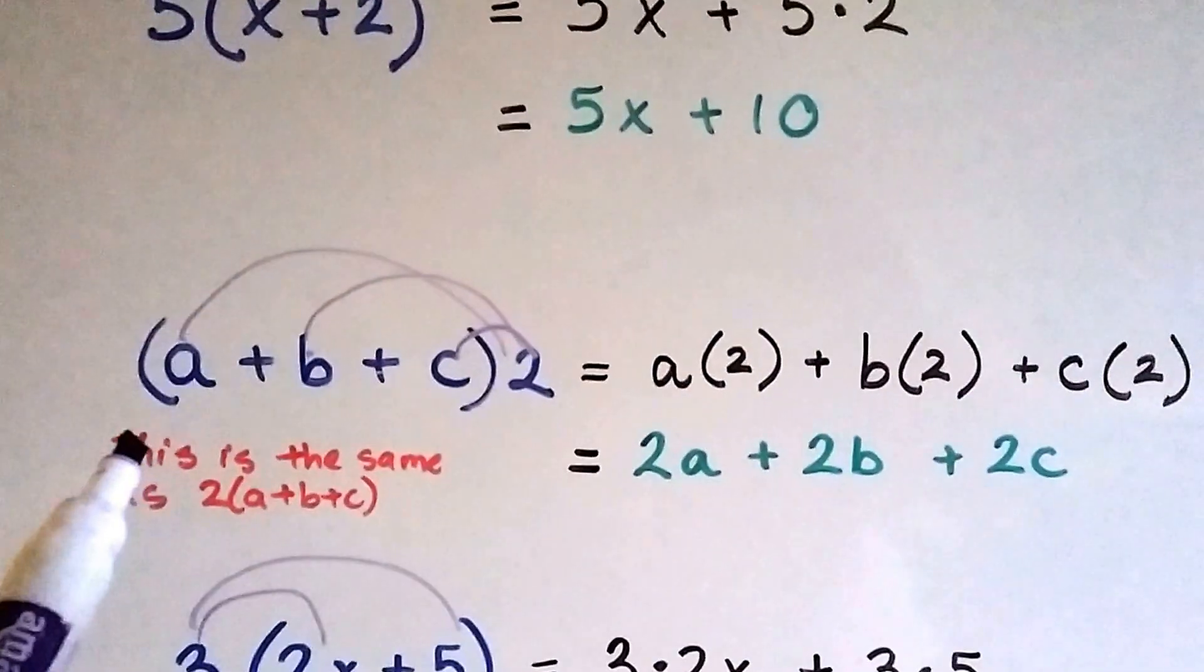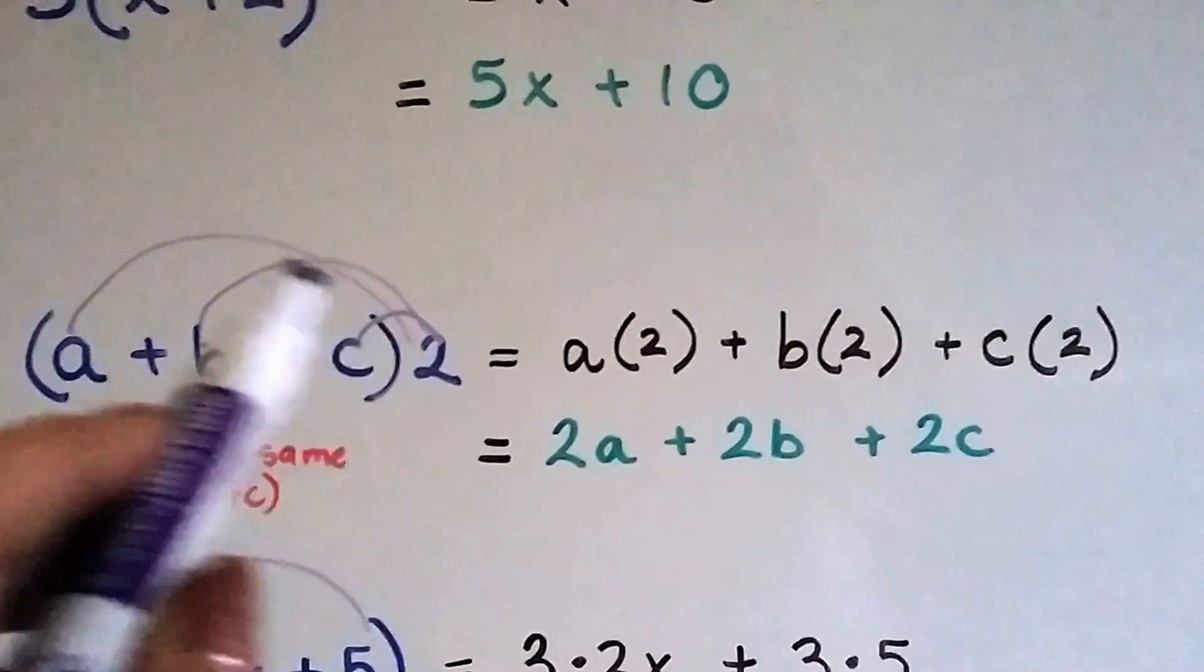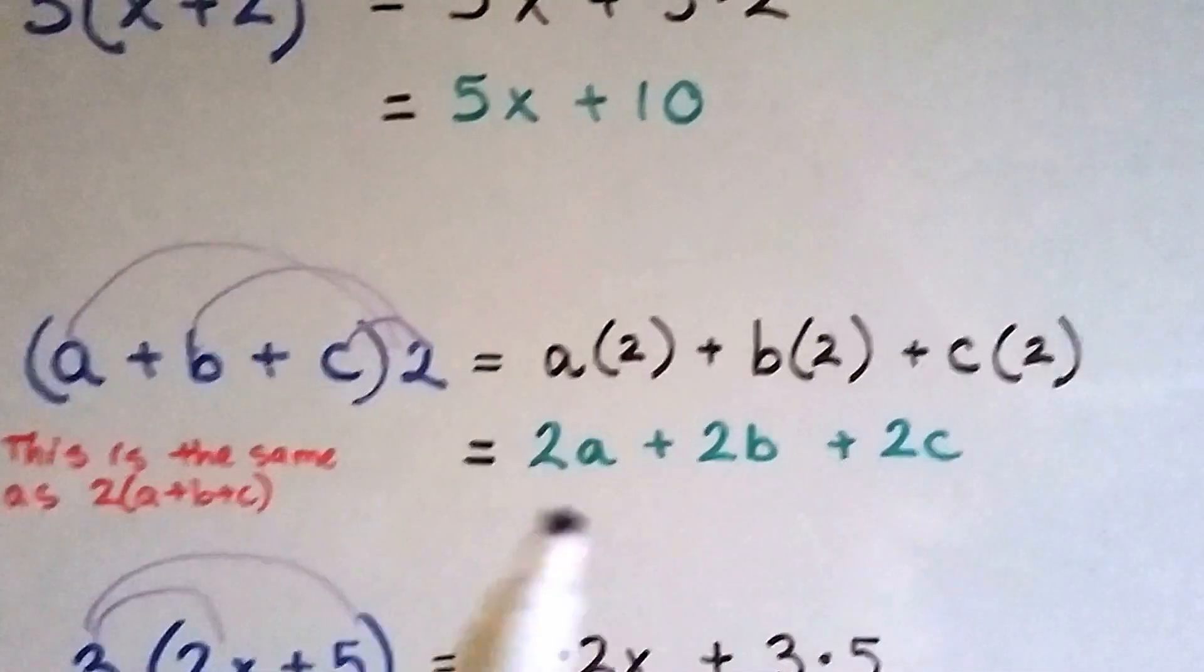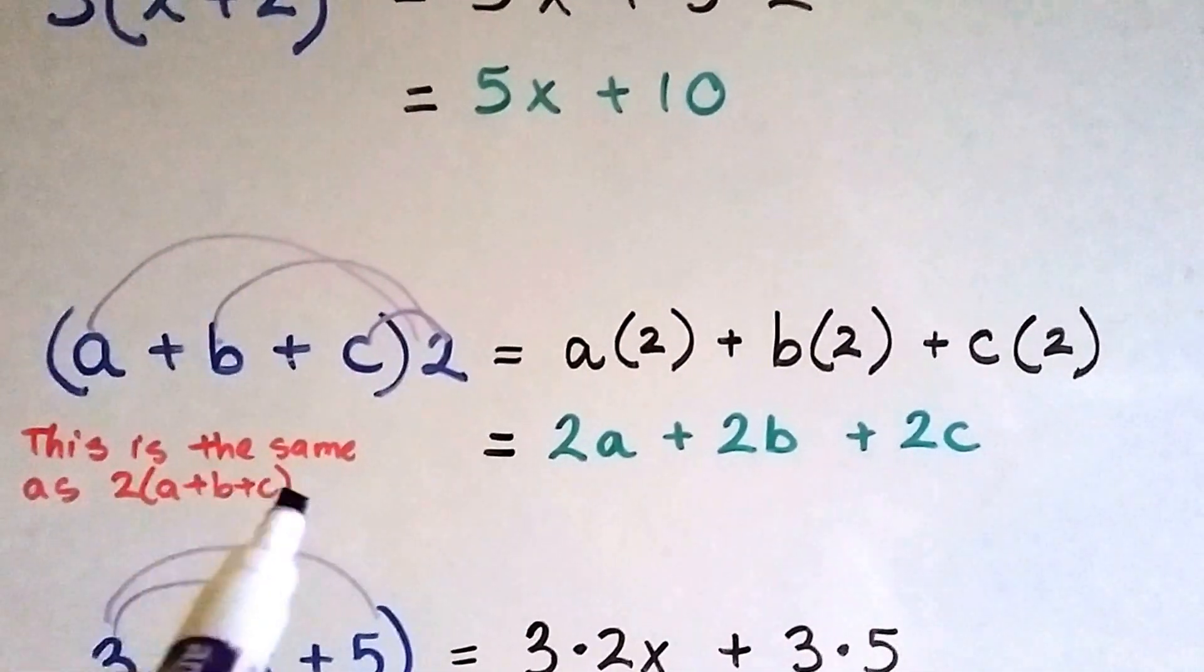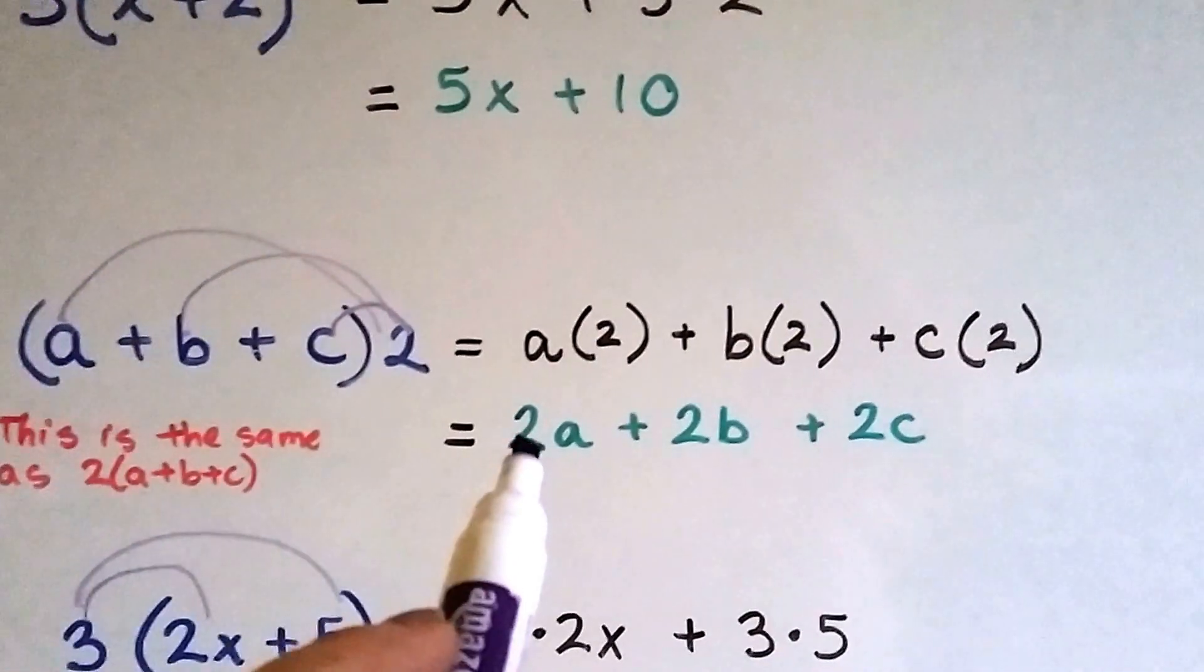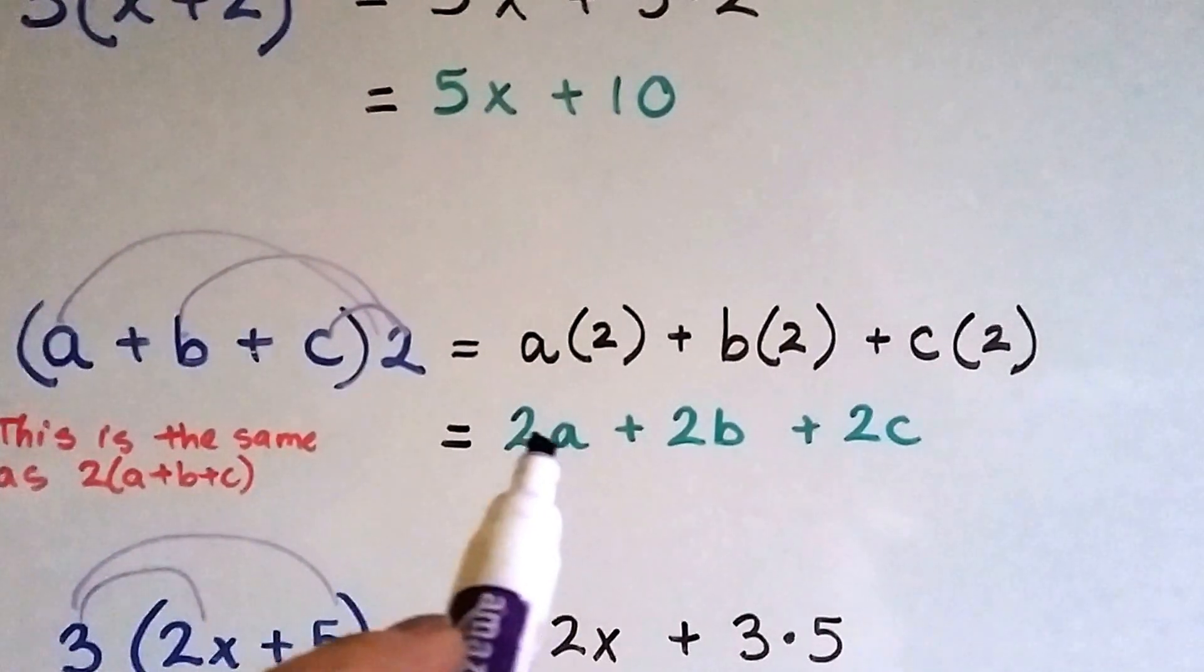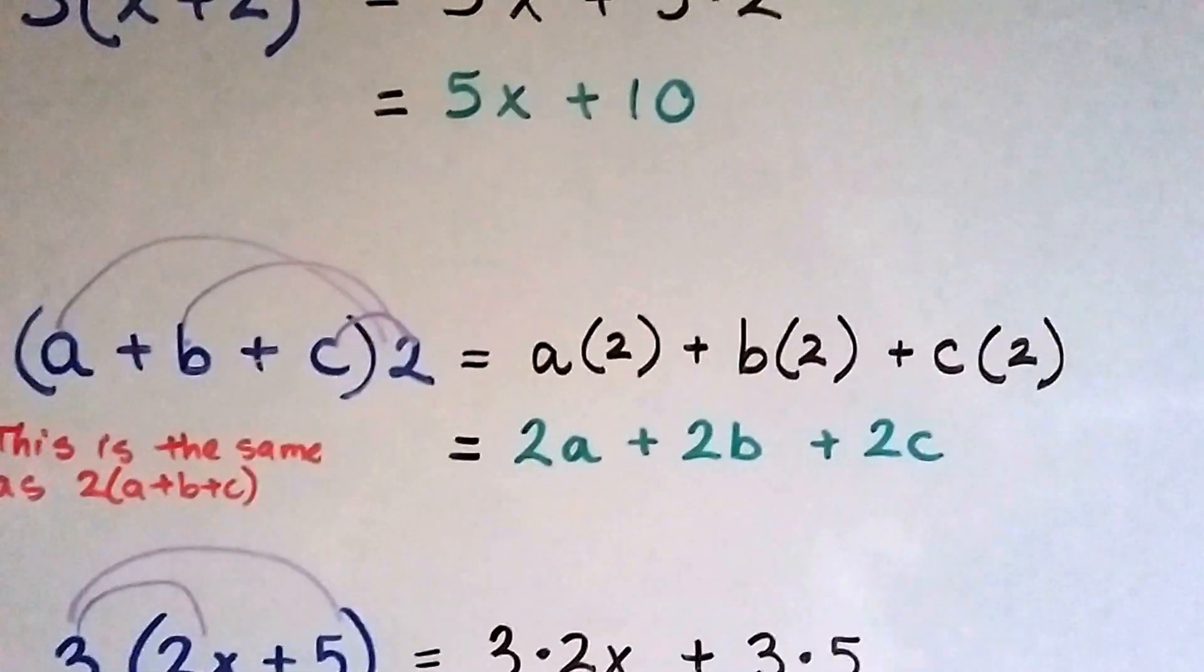And for this one, we've got all variables inside of parentheses with the 2 at the back. It's a times 2, b times 2, c times 2 with the plus signs in between. And this is the same thing as if the 2 were in the front and we distributed it that way, the 2a, 2b, 2c. See? And that's the correct way to write it. We want the coefficient, that number 2 in front of the variable is the coefficient. We want that coefficient to be in front of the variable.